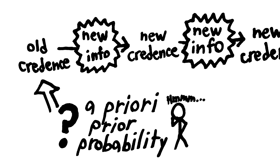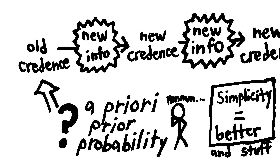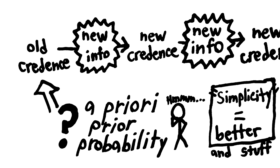This is a really controversial question. There are some general ideas, like simpler theories get higher prior probabilities — whatever simpler means. But there is no agreed upon answer to what the starting or a priori prior probabilities of a theory should be. However, we can use some general guidelines.